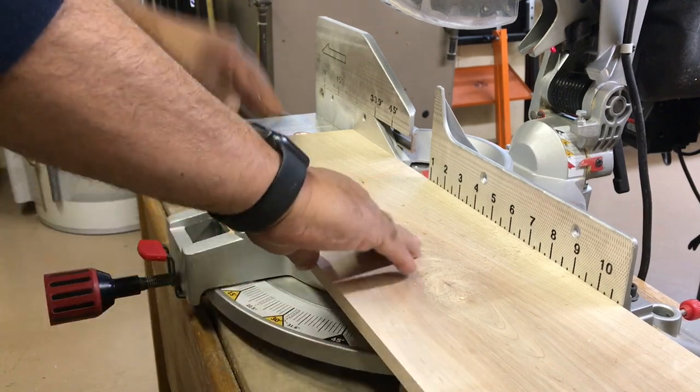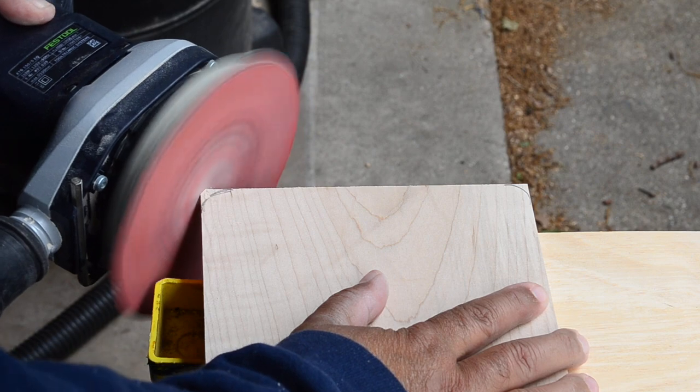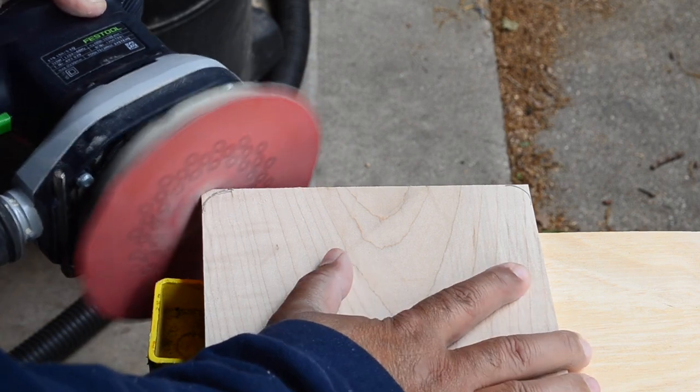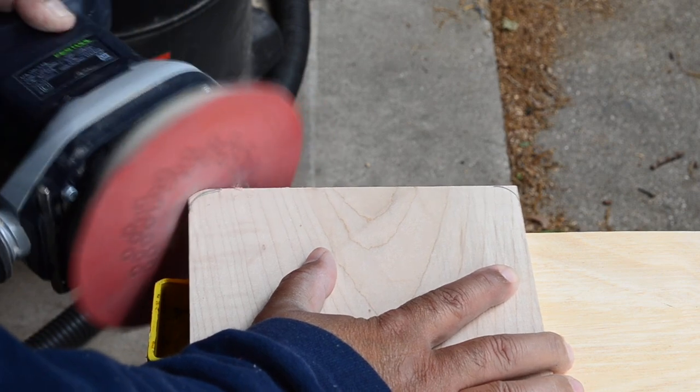I cut the top to length in the miter saw. Since this piece will be used a lot, I decided to round some of the sharp corners to minimize the chance of splintering.